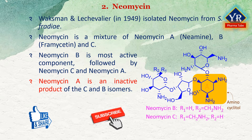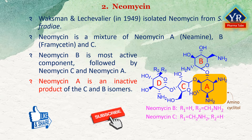Neomycins are 4,5-di-substituted, as shown in ring A, with a D-ribose unit which is ring C and two amino sugars, ring B and D. One of the amino sugars, ring B of neomycin, is neosamine C, which is chemically known as 2,6-diamino-2,6-dideoxy-D-glucose. The other amino sugar, ring D in neomycin B, is neosamine B, that is 2,6-diamino-2,6-dideoxy-D-idose, while in neomycin C it is a second neosamine C.